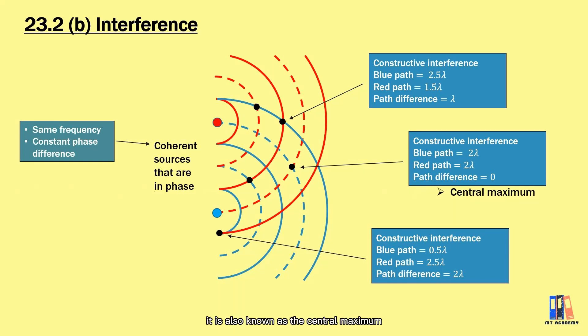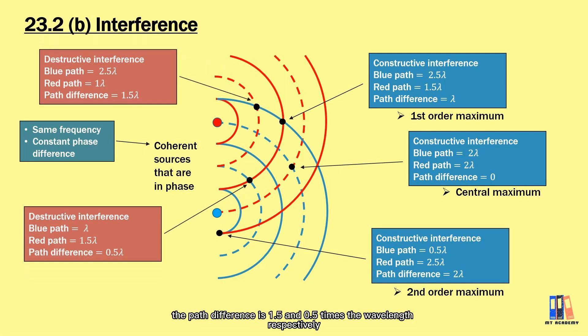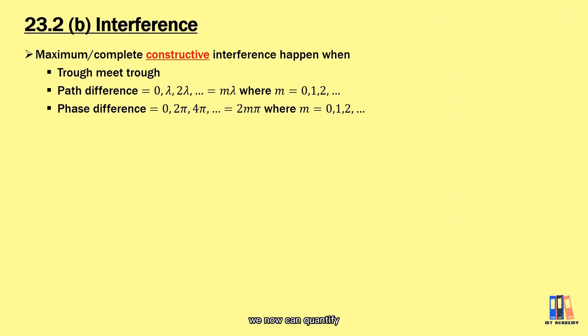For path difference of zero, it's also known as the central maximum, which is the bright fringe at the center of the screen if you perform Young's double-slit experiment. First order maximum is where the first bright fringe after the center one, with path difference of one wavelength. Then second order maximum for the second bright fringe and so on. For destructive interference, at these two points we can see the path difference is 1.5 and 0.5 times the wavelength respectively. From all these observations, we can quantify the condition for constructive and destructive interference.